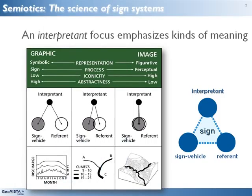The triadic sign relationship, highlighted here, creates an interpretant focus by positioning the interpretant at the top of the diagram. This focus draws our attention to a wide range of issues about kinds of meaning that must be considered when we're designing maps, whether those maps are static or dynamic ones.